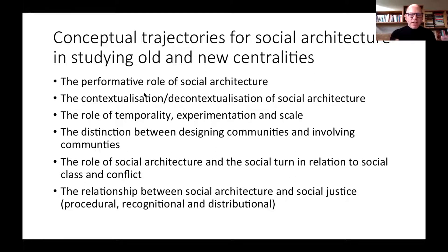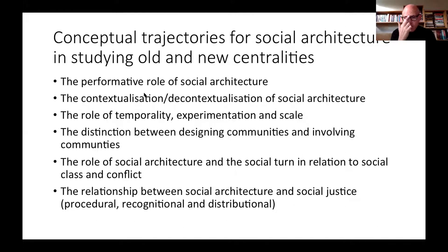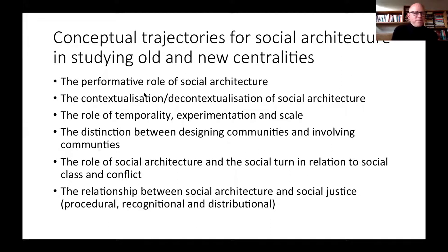At a larger scale, the role of social architecture and the current turn in social architecture should be seen in relation to larger issues of social class and conflict — which it seldom is, because it focuses on small-scale artistic experimentation and temporary urbanism projects instead of the role architecture could play for the city as a whole. It's important to look at how social architecture is formed today, learn from history, and relate it to issues of social justice: the procedural aspects such as involving communities, the recognitional aspects — who are the actors affected — and the distributional aspects of social justice. Thank you.